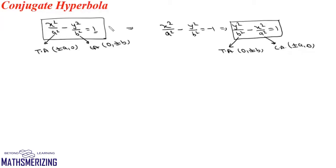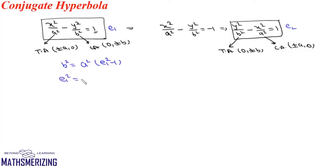The important result for conjugate hyperbolas is the relationship between their eccentricities. Say the eccentricity of the first hyperbola is e₁ and of the conjugate hyperbola is e₂. Using the relationship between a and b: b² = a²(e₁² - 1), so e₁² = (b² + a²) / a², and therefore 1 / e₁² = a² / (a² + b²).